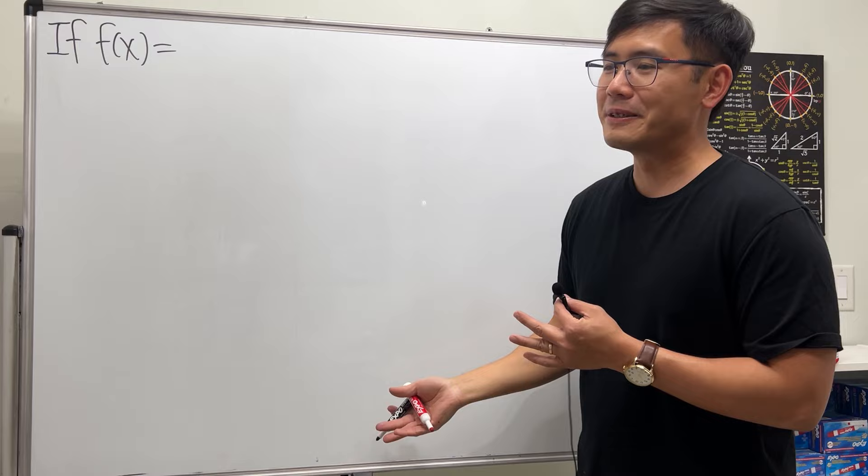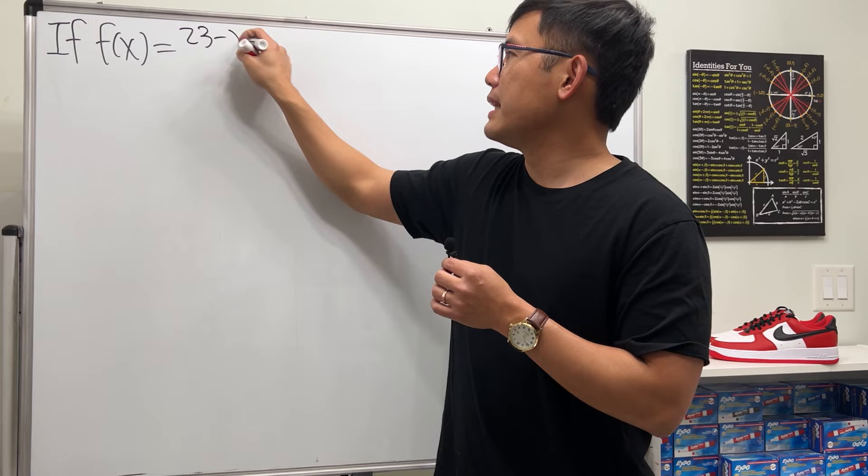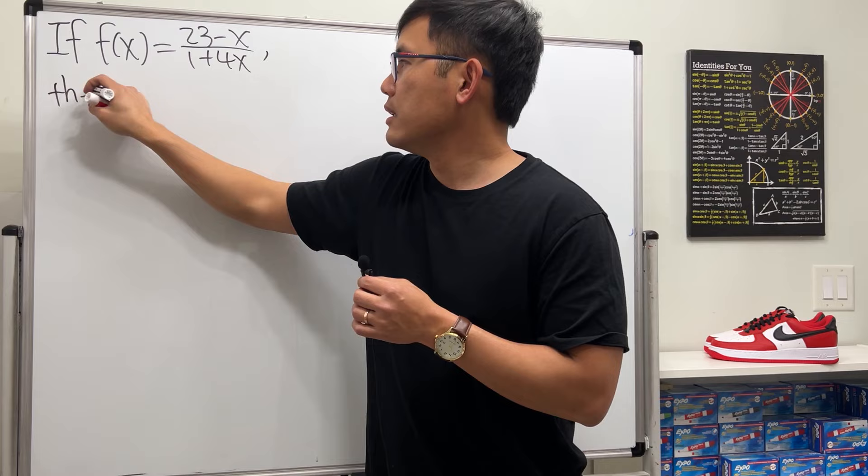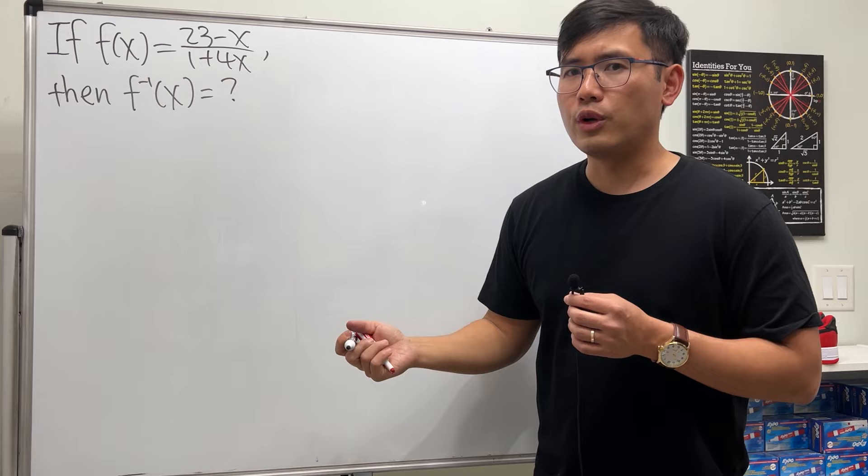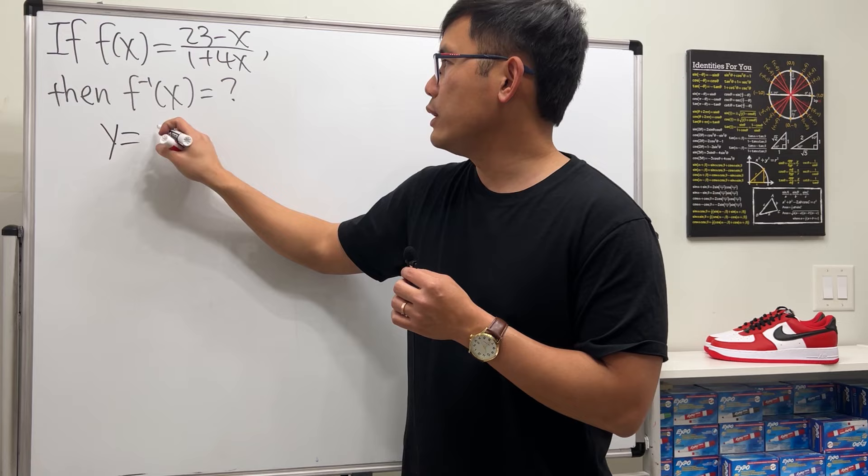The question is: we have a function (23 minus x) over (1 plus 4x), and our goal is to find its inverse function. This is a pretty standard pre-calculus problem. First, we write f(x) as y, so we have y equals (23 minus x) over (1 plus 4x).